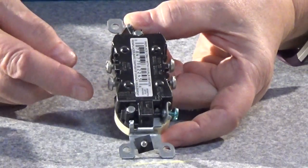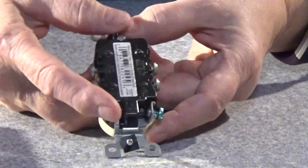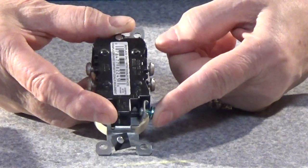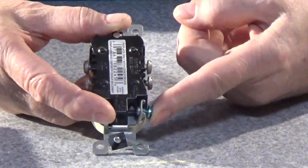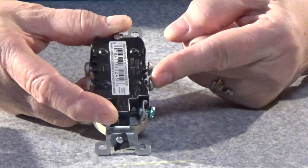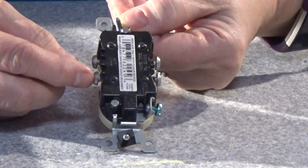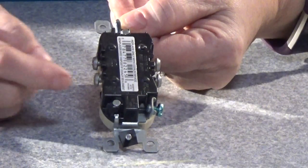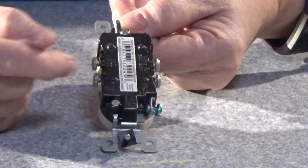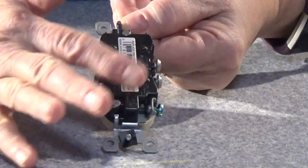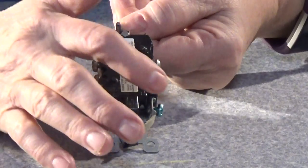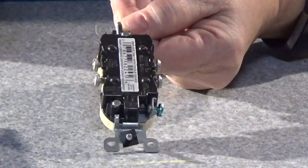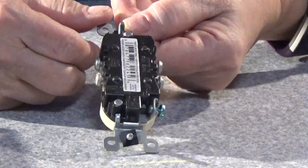As with all outlets, the silver screws on this side, where the neutral is, are going to be where the white wires go. And these brass ones on the other side are where the black wire goes. There's no back wire option. There's nothing special about this. Everything's going to attach with a loop in your wire onto the screws.